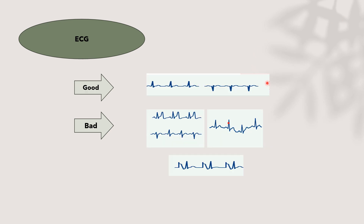ECG is a good trigger when we have a consistent monophasic QRS, either up or down. It becomes a poor signal when we have tall T waves, a bidirectional QRS complex, a wandering baseline, or when the T wave and QRS complex look similar in shape, or with multiple arrhythmias — in those cases we should switch to the arterial pressure waveform trigger.